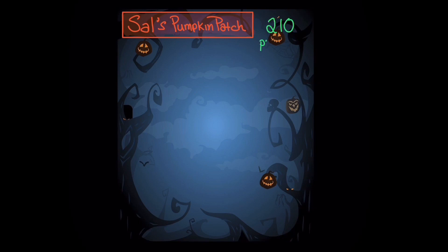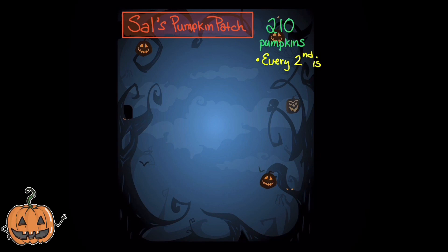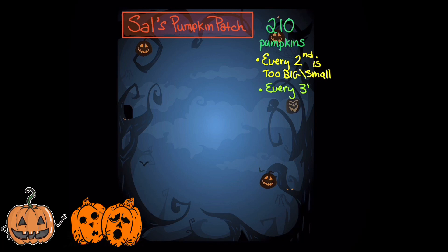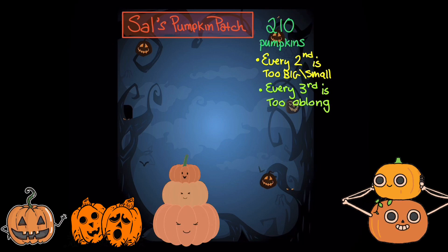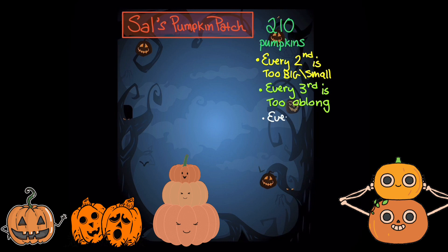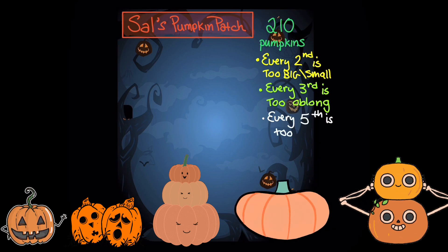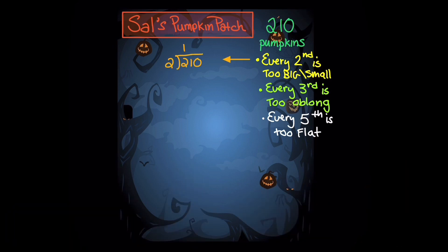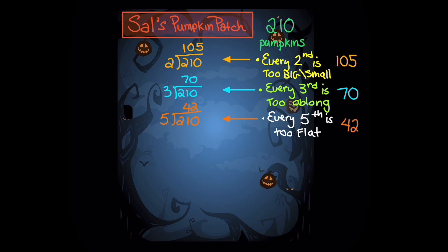At Sal's Pumpkin Patch, we start off with 210 pumpkins. Our first clue is that every second pumpkin is too big or too small. Our second clue is that every third pumpkin is too oblong. Our third clue is that every fifth pumpkin is too flat. Dividing 210 pumpkins by 2 gives us 105. Every third pumpkin gives us 70 pumpkins. And every fifth pumpkin gives us 42 pumpkins.